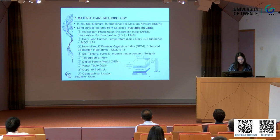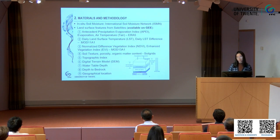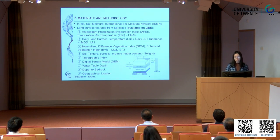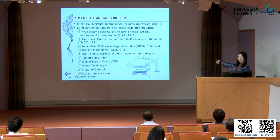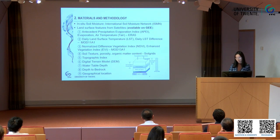Some features like water table depth are not available on Google Earth Engine, so we downloaded and uploaded them. Our physics-informed idea comes from the understanding that soil moisture is related to precipitation, evaporation, runoff, and groundwater — these are the key variables.